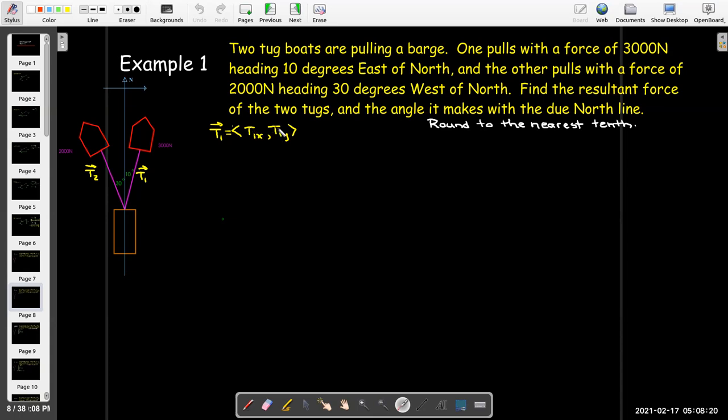This is T sub 1 x, T sub 1 y. The way we're going to do that is to use some triangle trigonometry. The horizontal component is opposite the 10 degrees. The vertical component is adjacent to the 10 degree angle. The hypotenuse is the magnitude of that force, which is given as 3000 newtons. We'll use that the opposite would be the hypotenuse times sine of 10 degrees, and that gives me a value of approximately 520.9.